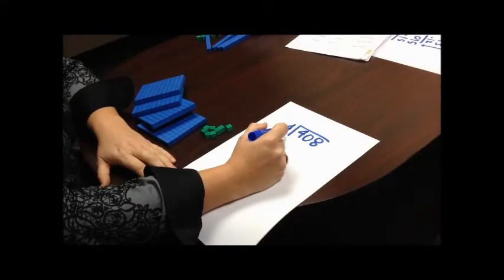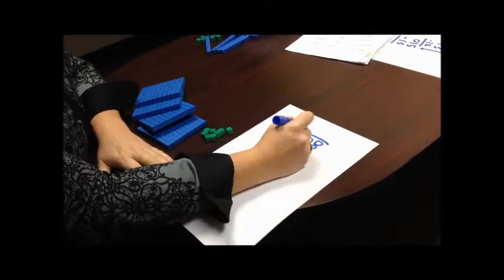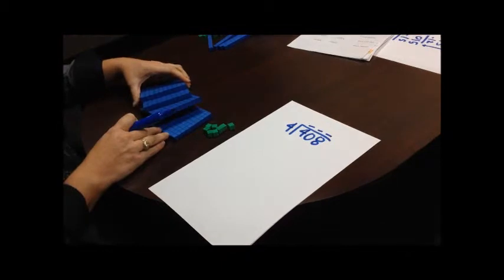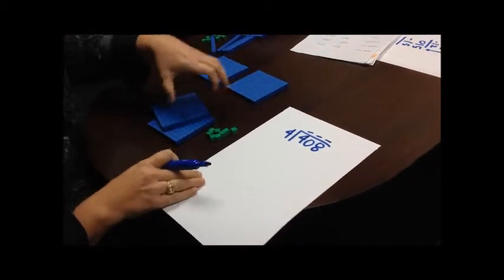Alright, so we're going to divide 408 into 4 equal groups. I'm going to divide my 100s, my 10s, my 1s. So I'm going to start with my 400s and divide my 400s into 4 equal groups.